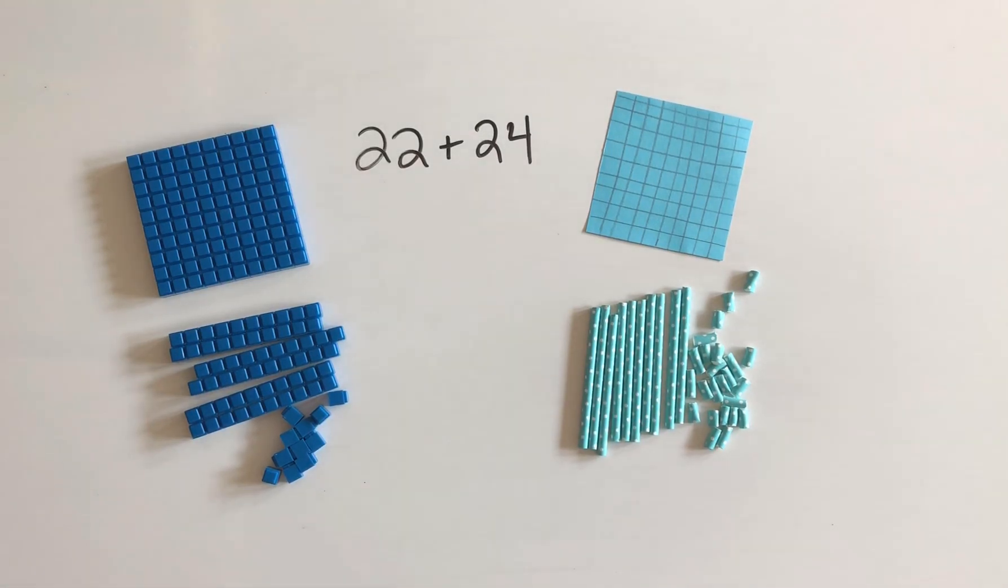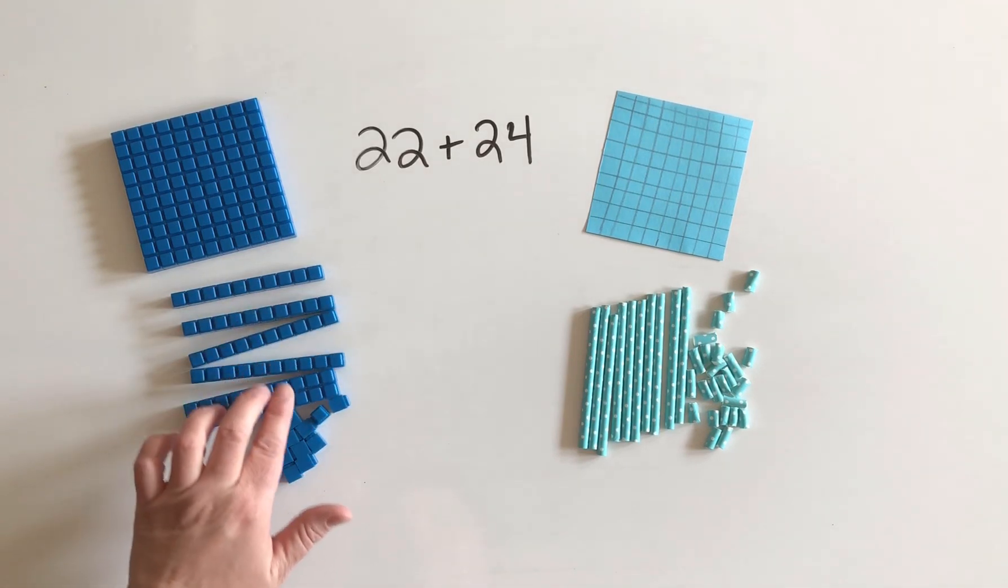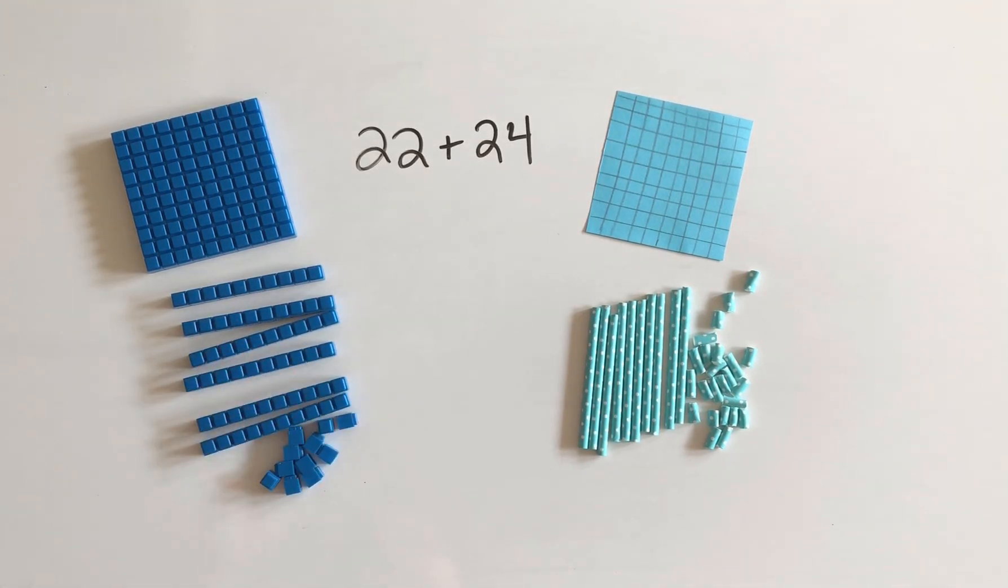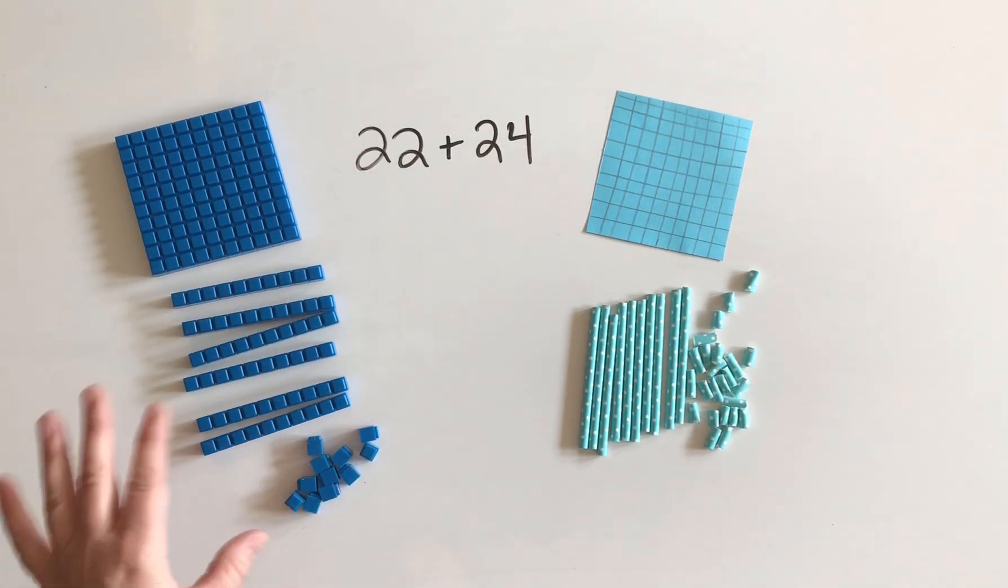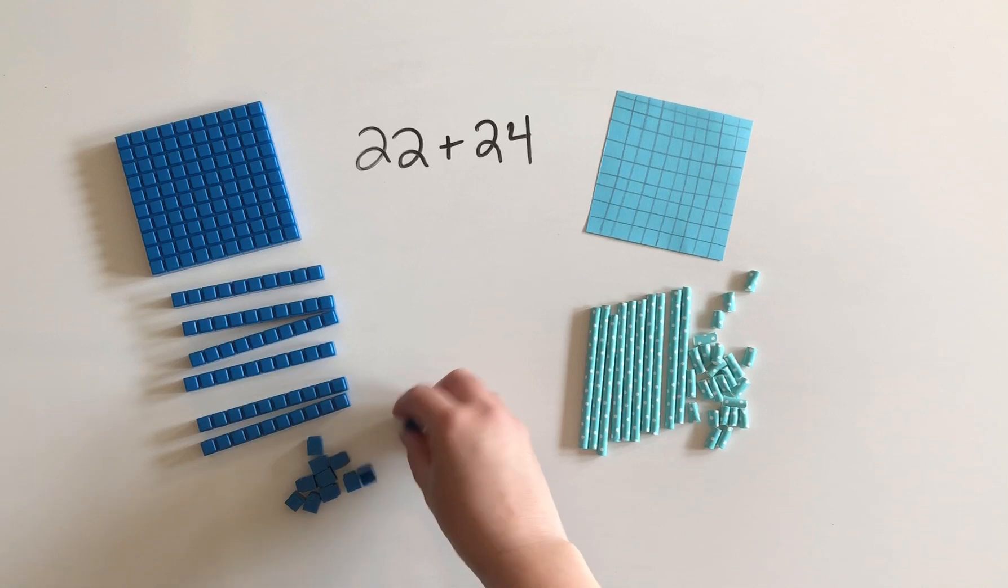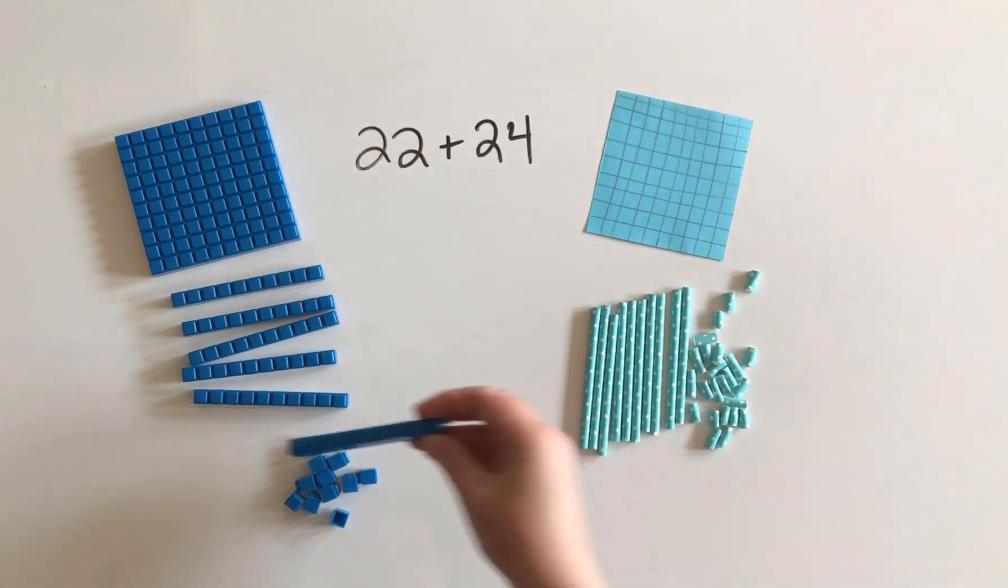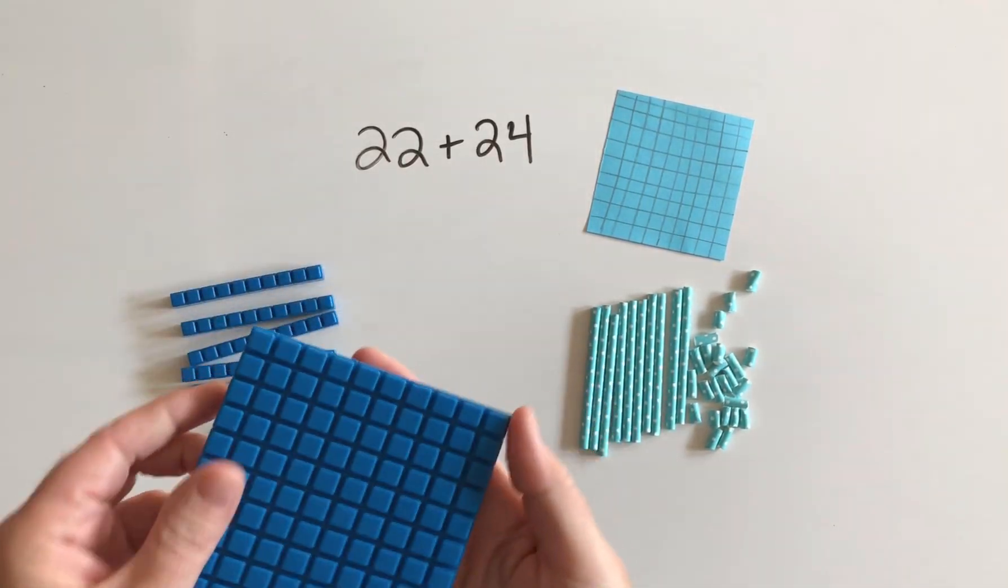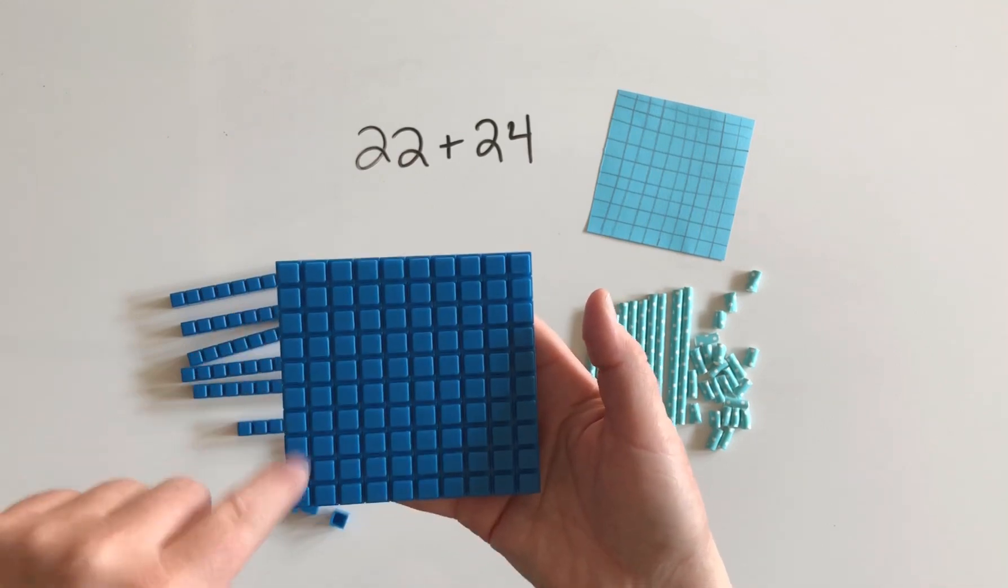So in classrooms, teachers use something called base 10 blocks and your child is probably familiar with these. They're widely used in classrooms all over the world. Base 10 blocks are a visual representation of numbers. These little ones represent 1, these represent 10 (you can see they're made up of 10 ones), and then these ones represent 100. You can see that it's made up of 100 ones or 10 tens.